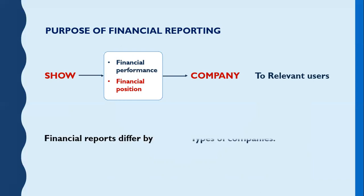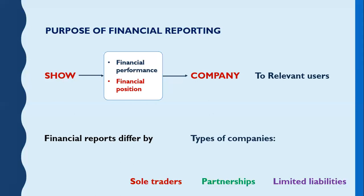Financial reports differ by the type of the company. Mainly, there are three types of companies: sole traders, partnerships, and limited liabilities. Sole traders usually include one person running the business, while partnerships may include two or more people coming together to run the company. Limited liabilities, on the other hand, usually include more people — even hundreds of people running the company. In this course, we're going to learn how to prepare financial reports for sole traders, partnerships, and even limited liabilities.